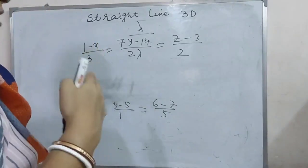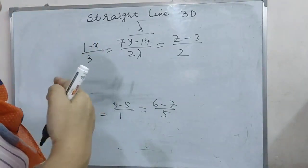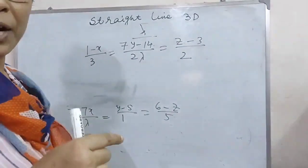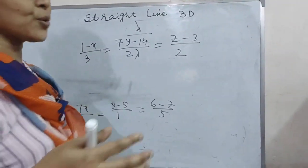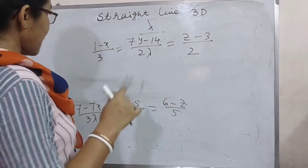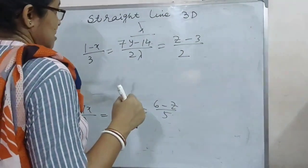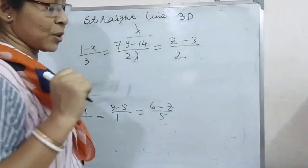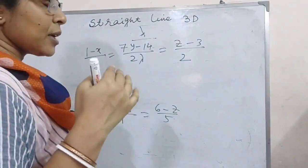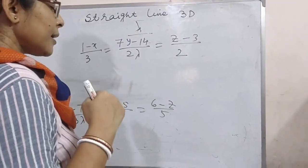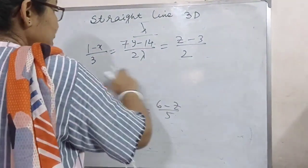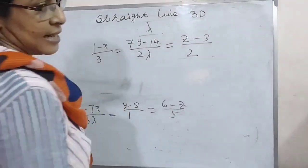If two straight lines are at right angles, then a1·a2 + b1·b2 + c1·c2 = 0. We know this from the vector equation where a1, b1, c1 and a2, b2, c2 are the direction ratios of the first and second straight lines respectively.